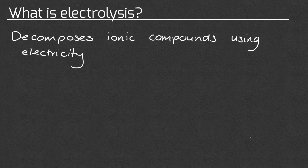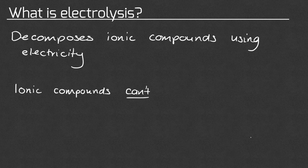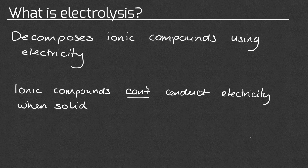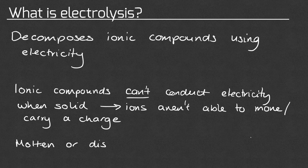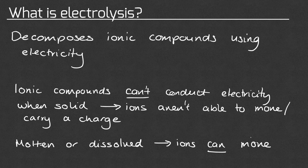Electrolysis is a method of decomposing ionic compounds by passing an electric current through them. However, it is important to remember that ionic compounds can't conduct electricity when they are solid. This is because the ions aren't able to move around the structure, therefore they are unable to carry a charge throughout that structure. So in order to do electrolysis you need to make sure the ionic compound you are using is either molten or dissolved, because when ionic compounds are molten or dissolved the ions are able to move and therefore can carry a charge and conduct electricity.